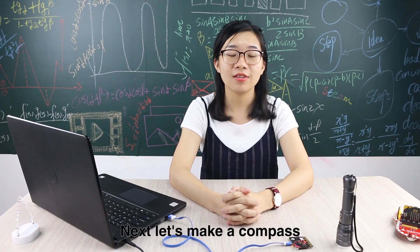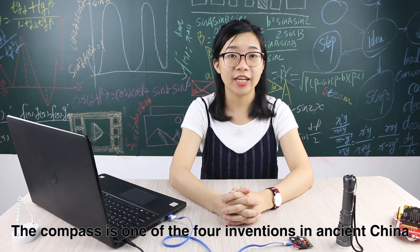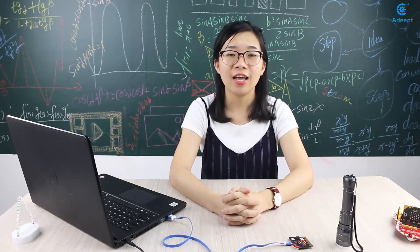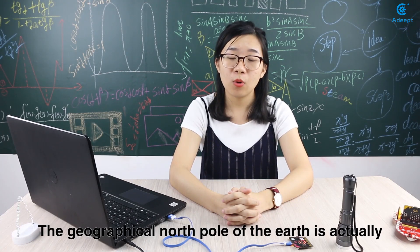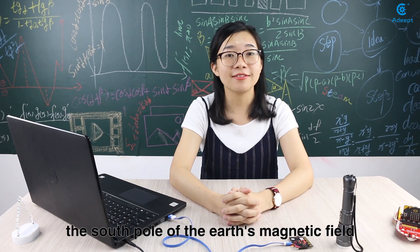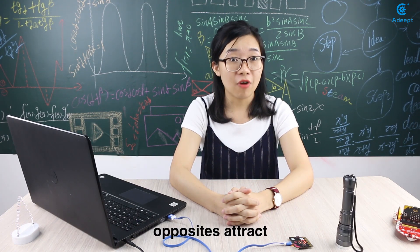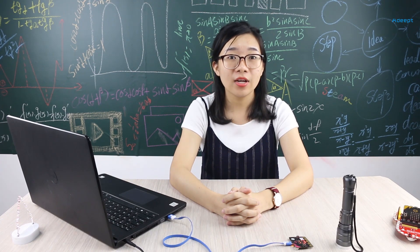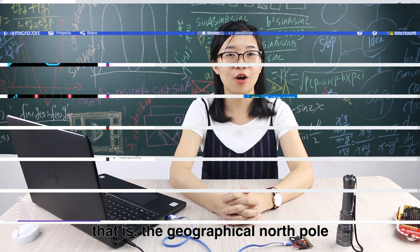Next, let's make a compass. The compass is one of the four great inventions of ancient China — it is a simple instrument for determining orientation. Our mobile phones also have this function. The geographical north pole of the Earth is actually the south pole of the Earth's magnetic field. Opposites attract, so the north pole of the magnet is attracted and points to the geographical north pole.